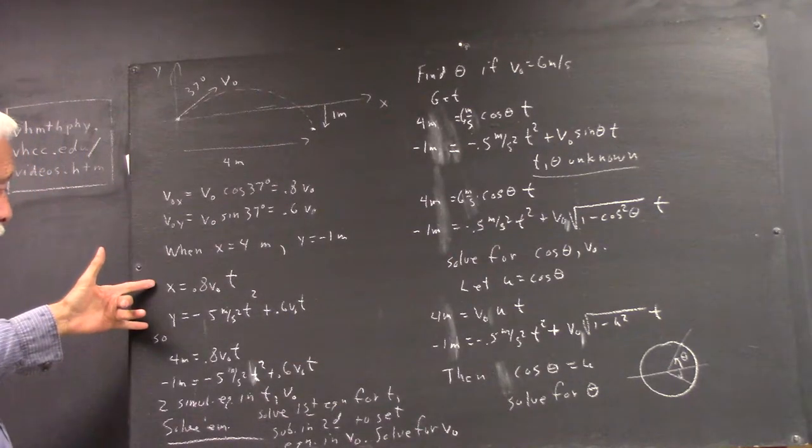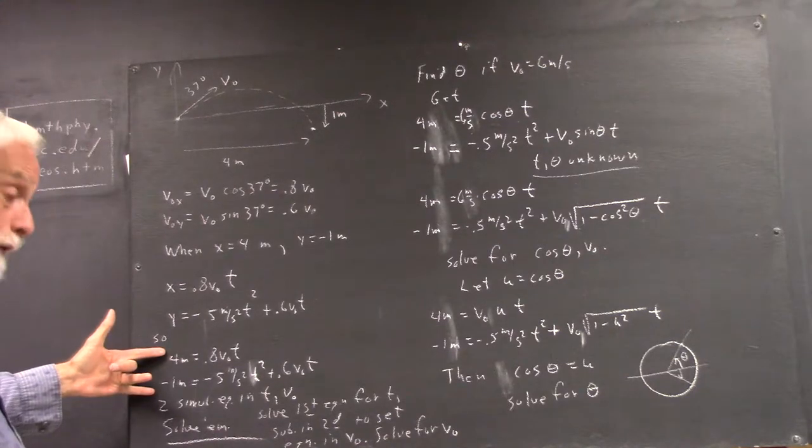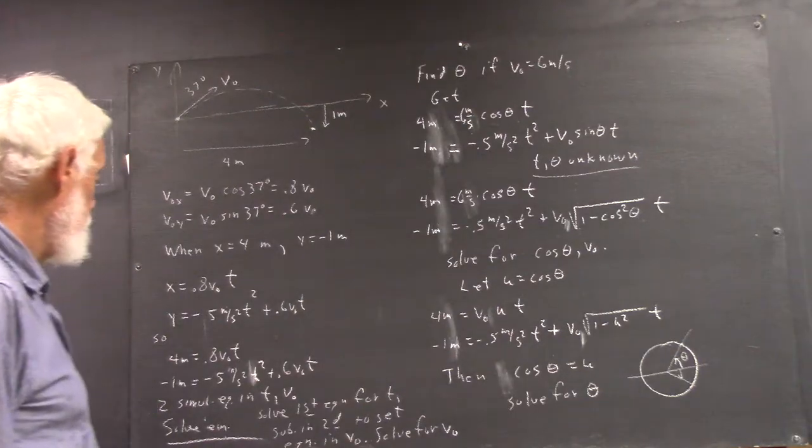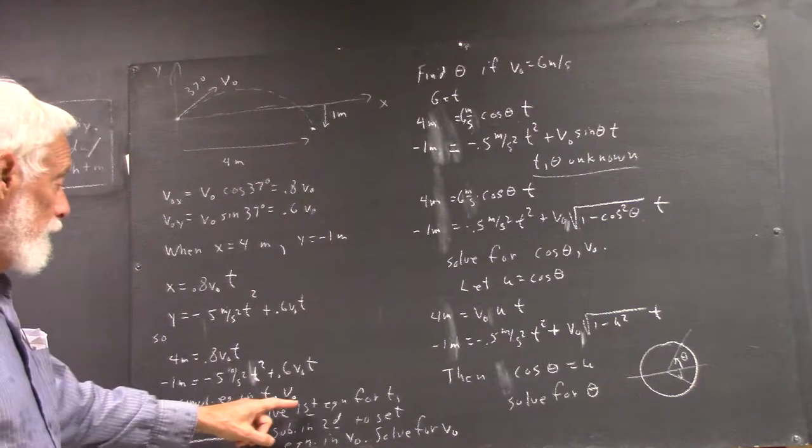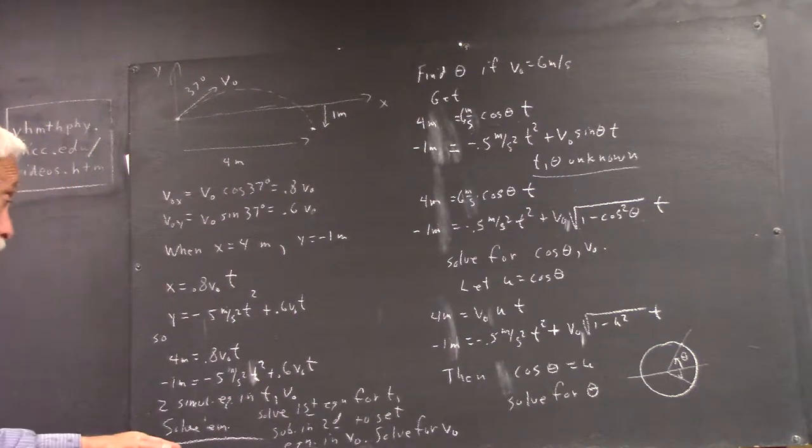Now, x has to be four meters when y is negative one meter, so we plug those values in for x and y, and now we have two simultaneous equations with the variables t and v₀, and we solve these equations.